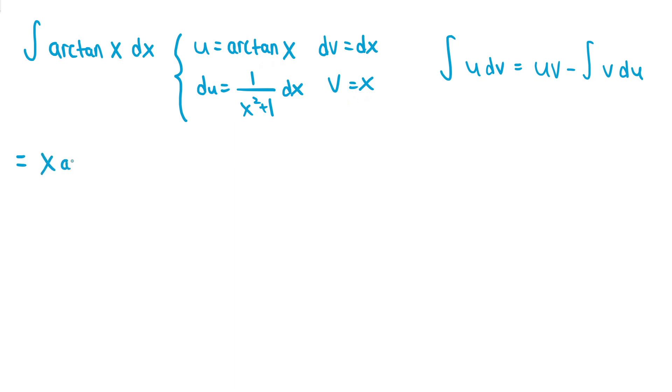Minus the integral of vdu. So that's the integral of x times 1 over x squared plus 1 dx, which is x divided by x squared plus 1 dx.